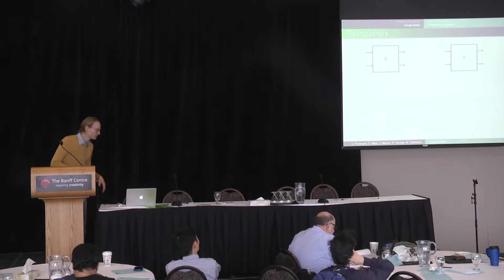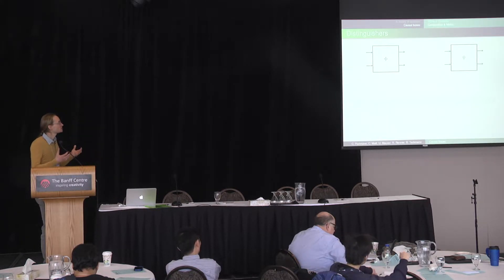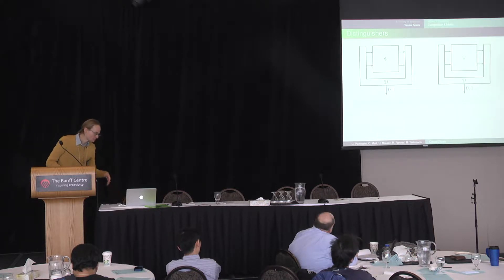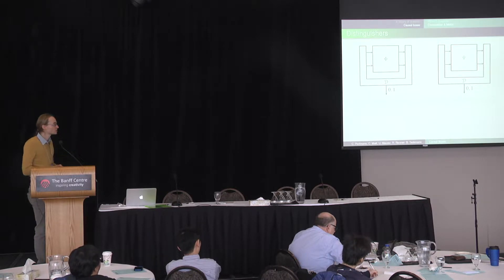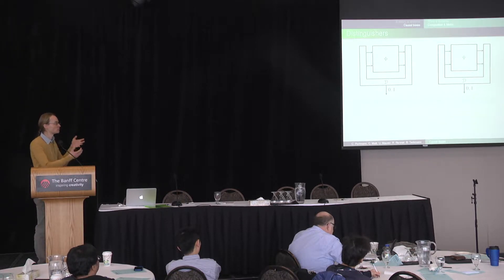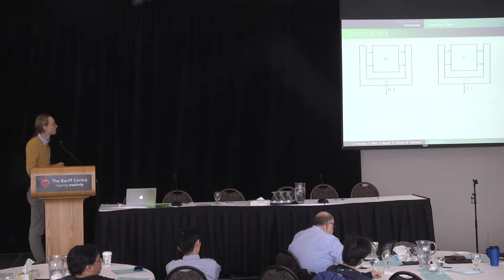The final thing is we want to measure a notion of distance between these systems, and here we simply use distinguishers. A distinguisher is another system — another causal box — which we plug into. Say we want to measure distance between phi and psi: we take another box D, which has to have the inputs and outputs which fit. We plug it into phi and psi, and it outputs just one bit — a guess: is this phi or is this psi?